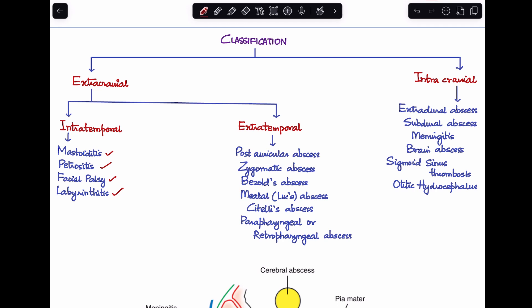Whereas extratemporal complications are some abscesses related to the mastoid, and these are post-auricular abscess, zygomatic abscess, Bezold's abscess, Luc's abscess, Citelli's abscess, and parapharyngeal or retropharyngeal abscess.